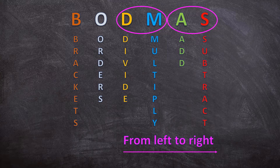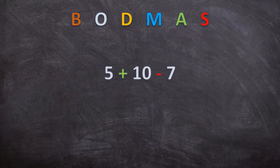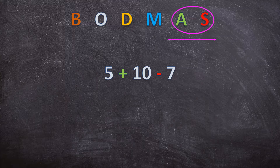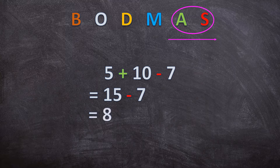Now let's look at the first example — an easy one. In this example, we only have addition and subtraction. We know when we have addition and subtraction together, we go from left to right. So first we add: 5 plus 10 is 15. Then we subtract: 15 minus 7 is 8.